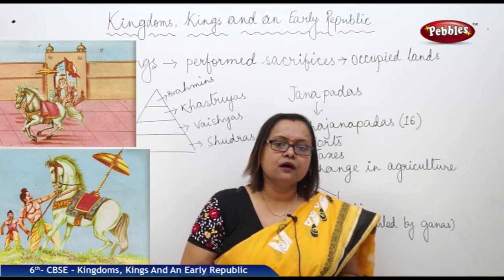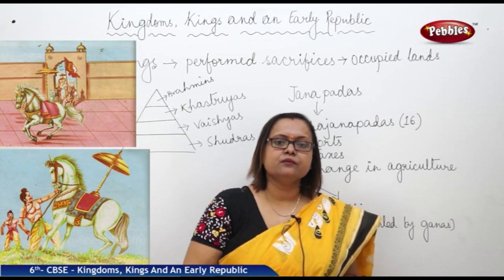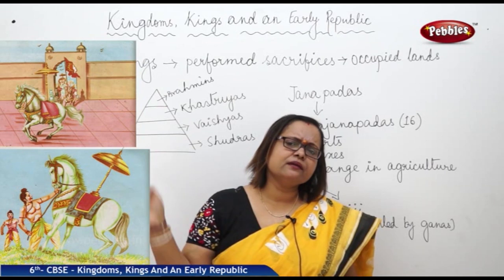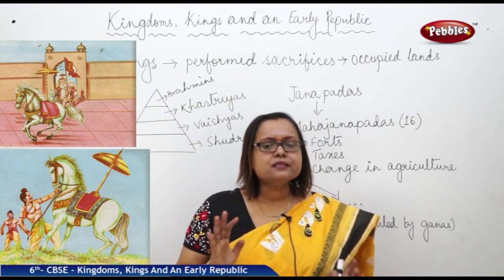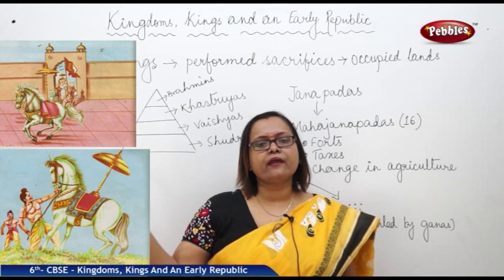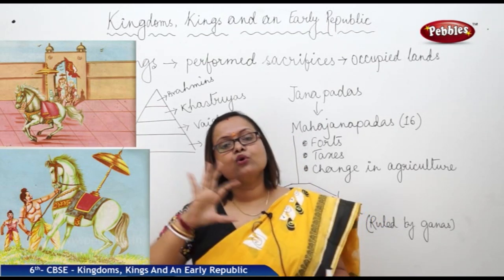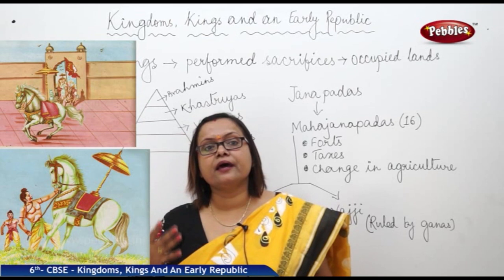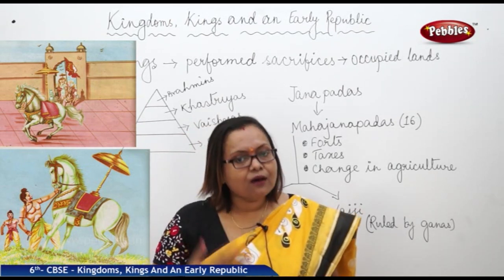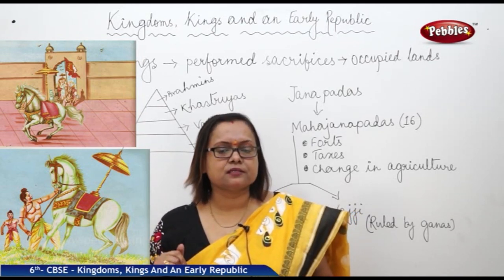Now what is Ashvamedha? Ashvamedha means horse. A particular horse was assigned and set free to move in whatever direction it wanted. The king's army used to follow that horse as it roamed from one state to another. Whatever land the horse would go to, that land would be considered part of the king's territory. Now we need to think about why the king of another state would accept that.